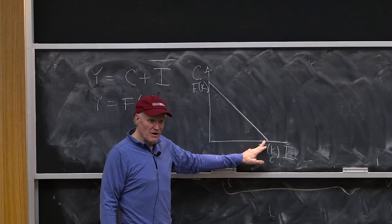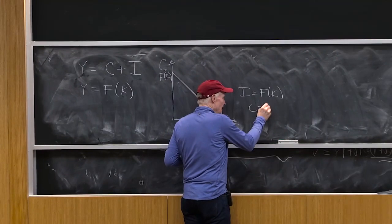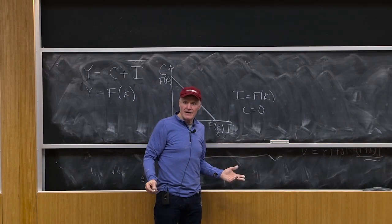Now, of course, if you wanted to produce, if you wanted I equals F of K, what would that mean? That means C equals zero, okay? Not such a great idea, probably. Right? Robinson Crusoe wants to eat.